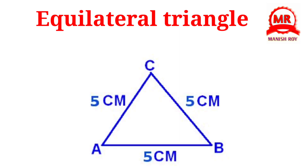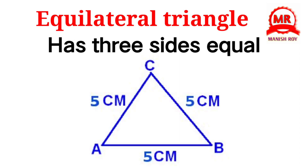Equilateral triangle. An equilateral triangle has all three equal sides. You can see in this figure that in triangle ABC, all three sides are of equal length, so it is called an equilateral triangle.